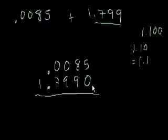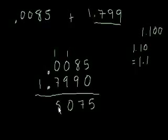Now we're really ready to add. 5 plus 0 is 5. 8 plus 9 is 17. 1 plus 0 plus 9 is 10. Carry the 1. 1 plus 0 plus 7 is 8. And then bring down this 1, right? Because it's nothing to add it to.